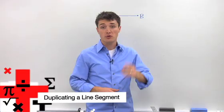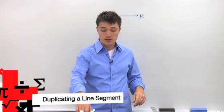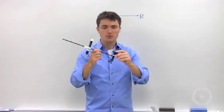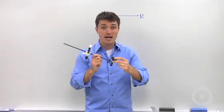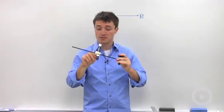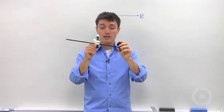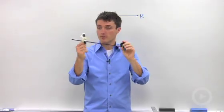The rules of construction say you can only have two tools at your disposal. The first is a compass. I know you're probably thinking that does not look anything like my compass, but it basically accomplishes the same thing. I can control the radius just by shifting the marker part.